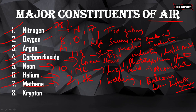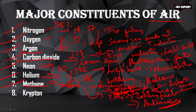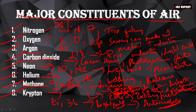Coming to the seventh: methane. It is produced by organic and inorganic materials. Symbol is CH4. Used as cooking fuel and in the automobile industry. It is available in natural form and manufactured in industries by combination of carbon and hydrogen. The eighth one is krypton. Symbol is Kr and atomic number is 36. It is used in light bulbs. These are the major constituents of air.